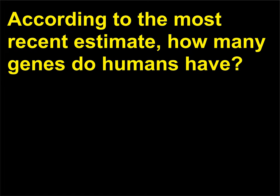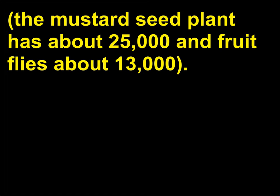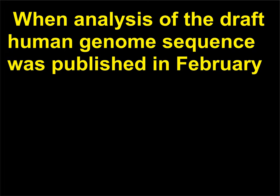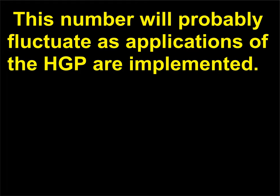According to the most recent estimate, how many genes do humans have? As of April 2003, researchers estimated that building a human would require only about 24,500 genes. The mustard seed plant has about 25,000 and fruit flies about 13,000. When analysis of the draft human genome sequence was published in February 2001, there was estimated to be only about 30,000 to 40,000 protein-coding genes. This number will probably fluctuate as applications of the Human Genome Project are implemented.